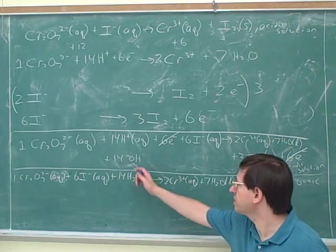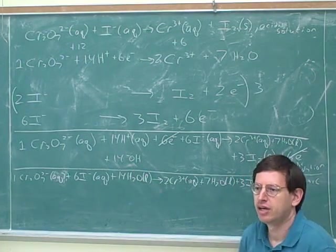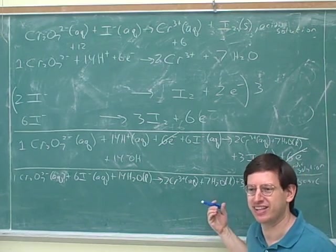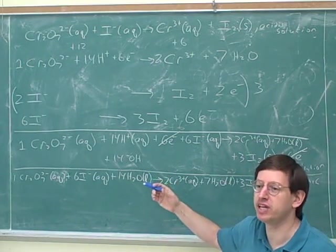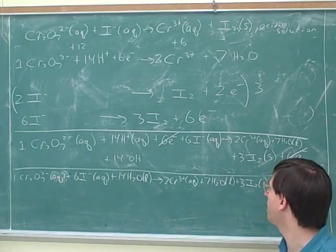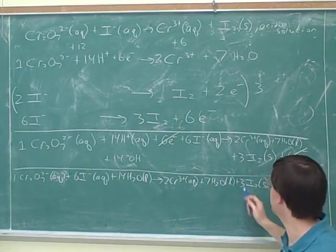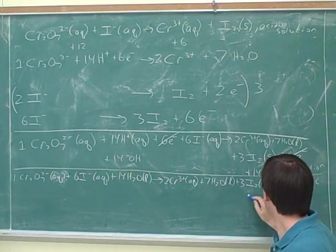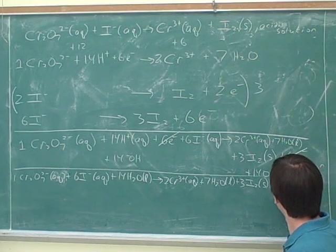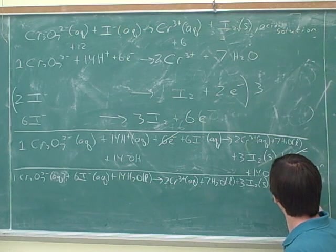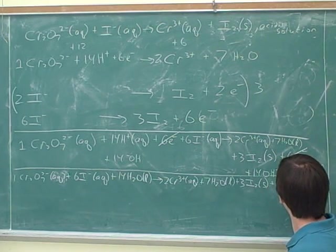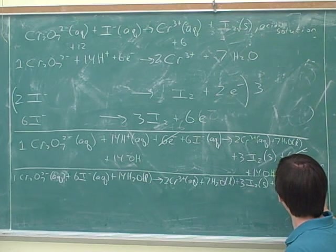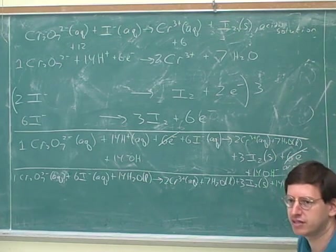Now remember what we did is we added 14 hydroxides to the left. But that's only legal if we also add 14 hydroxides to the right. We can add anything we want to the left, but only if we do the same thing to the right. So now we're obligated to add 14 hydroxides to the right. And the hydroxides would be labeled as AQ phase.